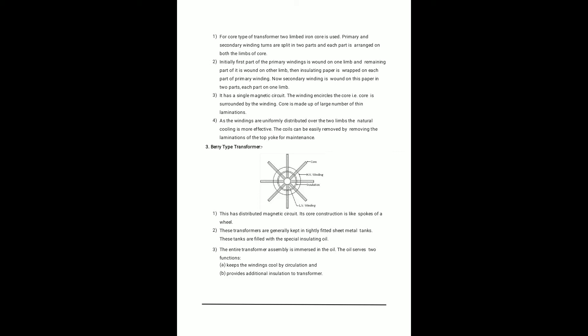Insulating paper is wrapped on each part of the primary winding, and then the secondary winding is wound over this paper in two parts, each part on a limb. It has a single magnetic circuit. The winding encircles the core and is made up of a large number of thin laminations. The windings are uniformly distributed over the two central limbs, allowing more effective natural cooling. The coils can be easily removed by removing the top yoke laminations for maintenance.